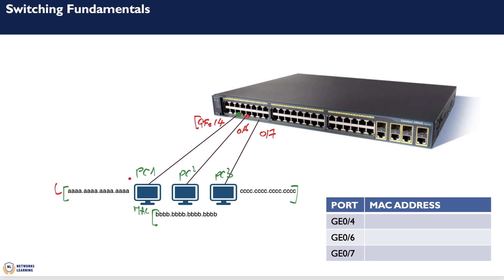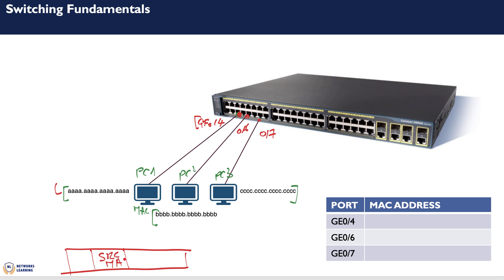The switch needs a mechanism to map ports to the MAC address of the connected device. When you start up a switch that has just booted, it has no knowledge of who is connected. The ports are up and ready to forward traffic. When PC1 sends a packet to PC3, the frame is received on gigabit 0/4. The frame contains a source MAC address and a destination MAC address.